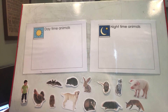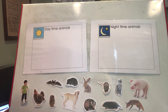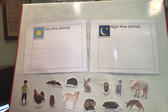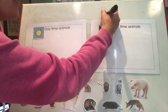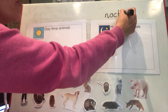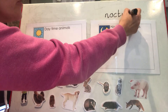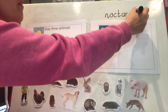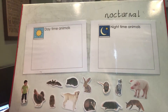Can you remember the word that describes an animal that comes out at night? It begins with an 'n.' Did you get it? It is 'nocturnal.' So I'm going to write that up here — nocturnal.